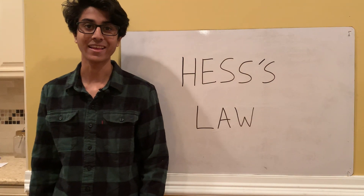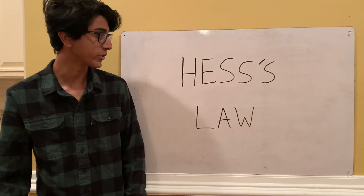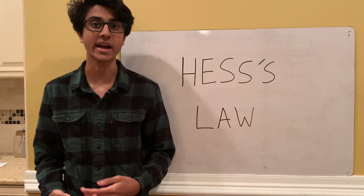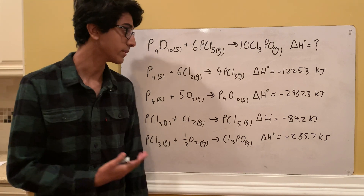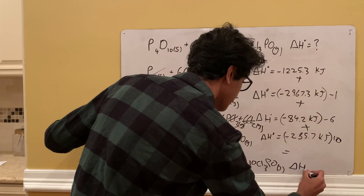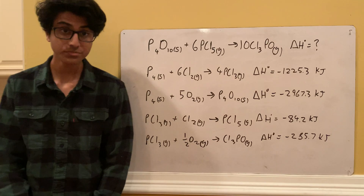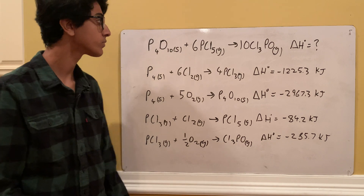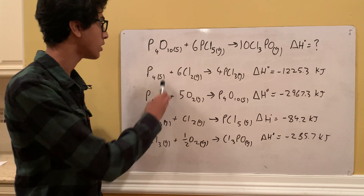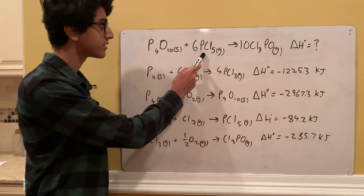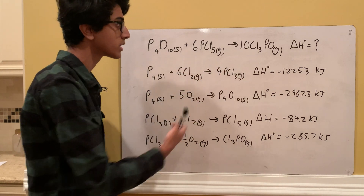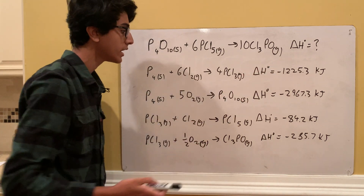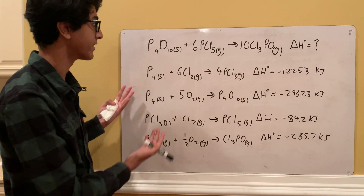Welcome back to Ubad's lab. Today I'm going to be showing you how to use Hess's Law in order to find the change in enthalpy of a reaction. This is all the information we're going to be given in this problem: we're given the reaction P4O10 plus 6PCl5 goes to 10Cl3PO, and we're asked what's the change in enthalpy of this reaction.